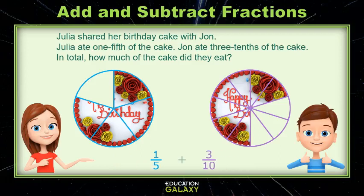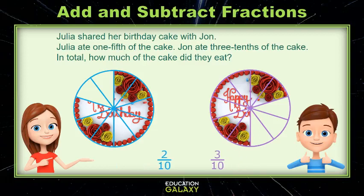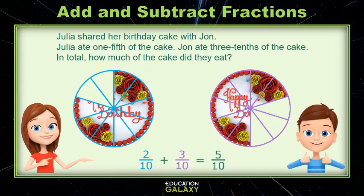Well, to find out how much they ate all together, I need to add, and as I've just learned I can't add fifths and tenths. I need common denominators. So let's turn that fifth into tenths by separating all those fifths into two pieces and we end up with two tenths. Now we can add two tenths and three tenths by leaving the denominators alone, adding the numerators, and kablammo! Five tenths of the cake has been eaten.